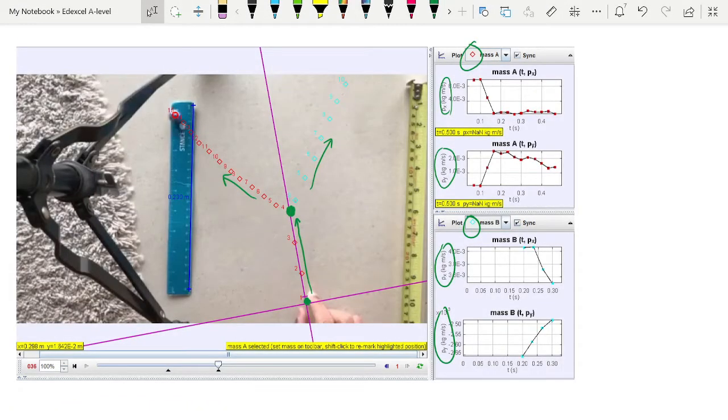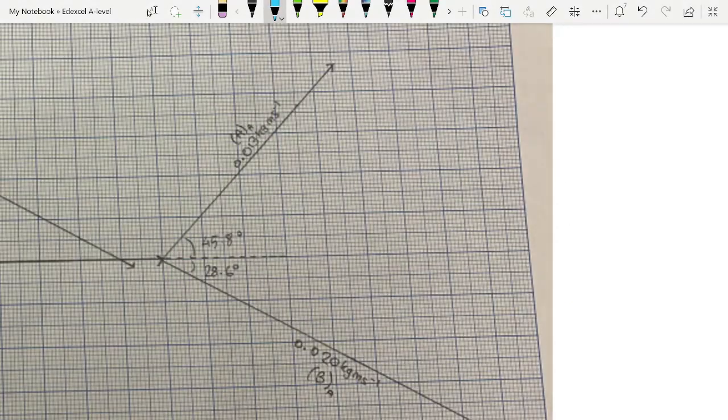Once you've done all your tracking and got your momentum, the idea behind this Core Practical is that you then produce a vector diagram from it. Students often do this incorrectly. I have an example here. This is the ball incoming, and they think that by drawing a nice scale drawing of the two balls moving off in opposite directions with the angles that this is a vector diagram.